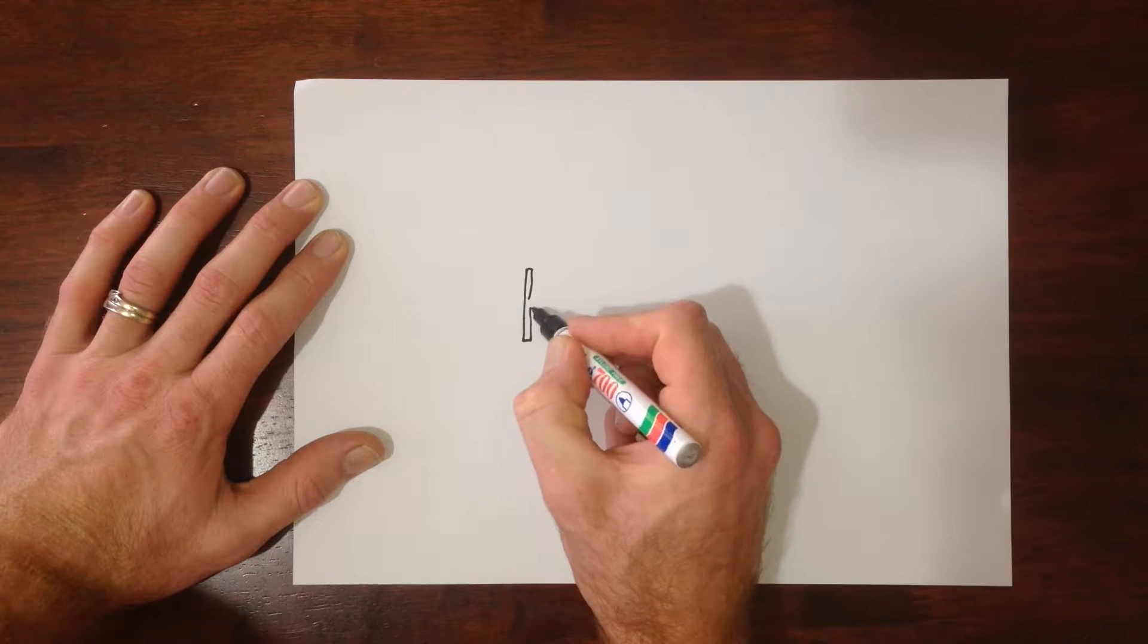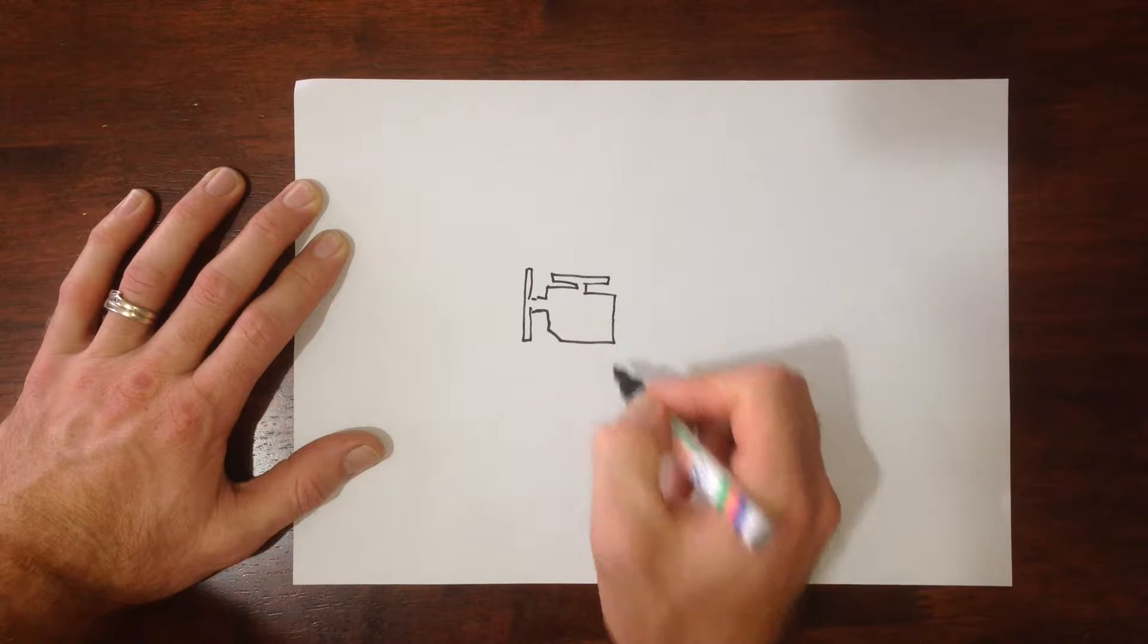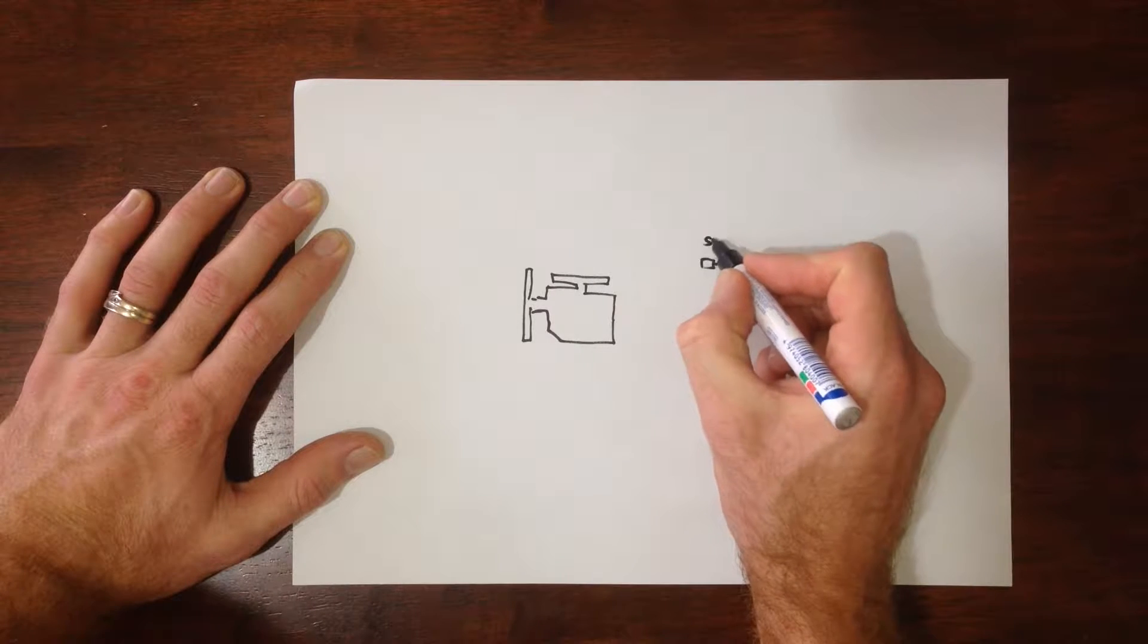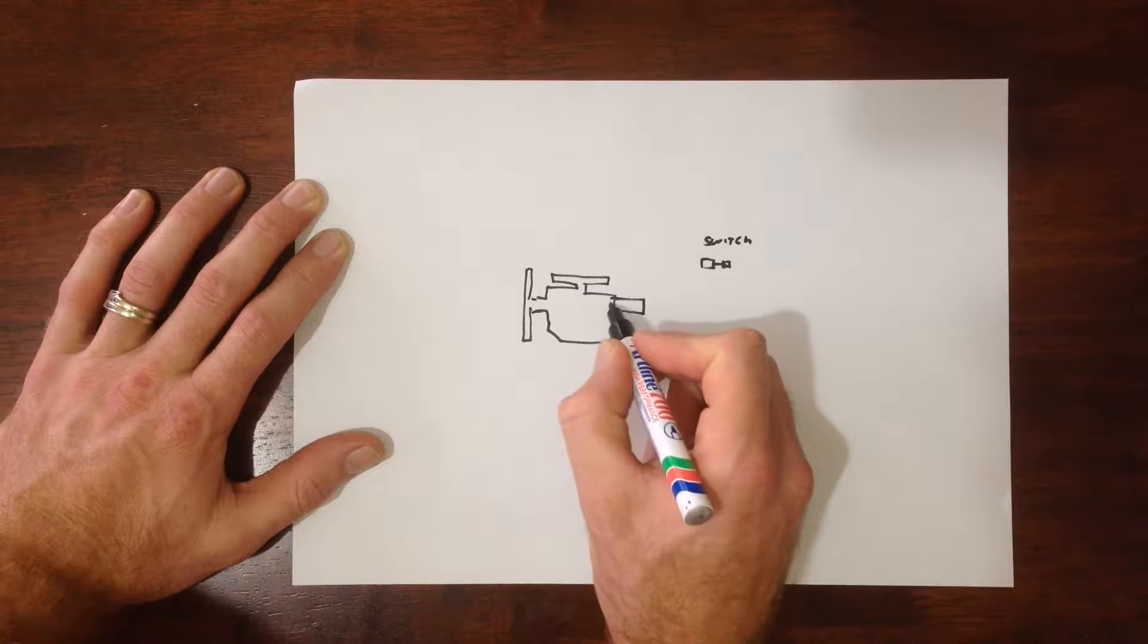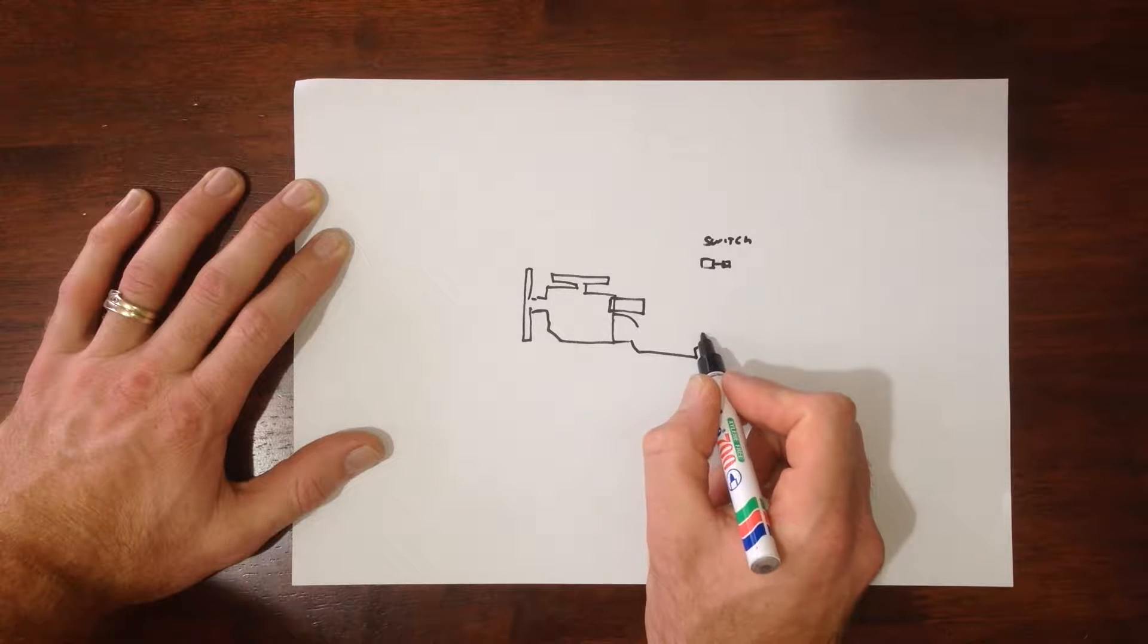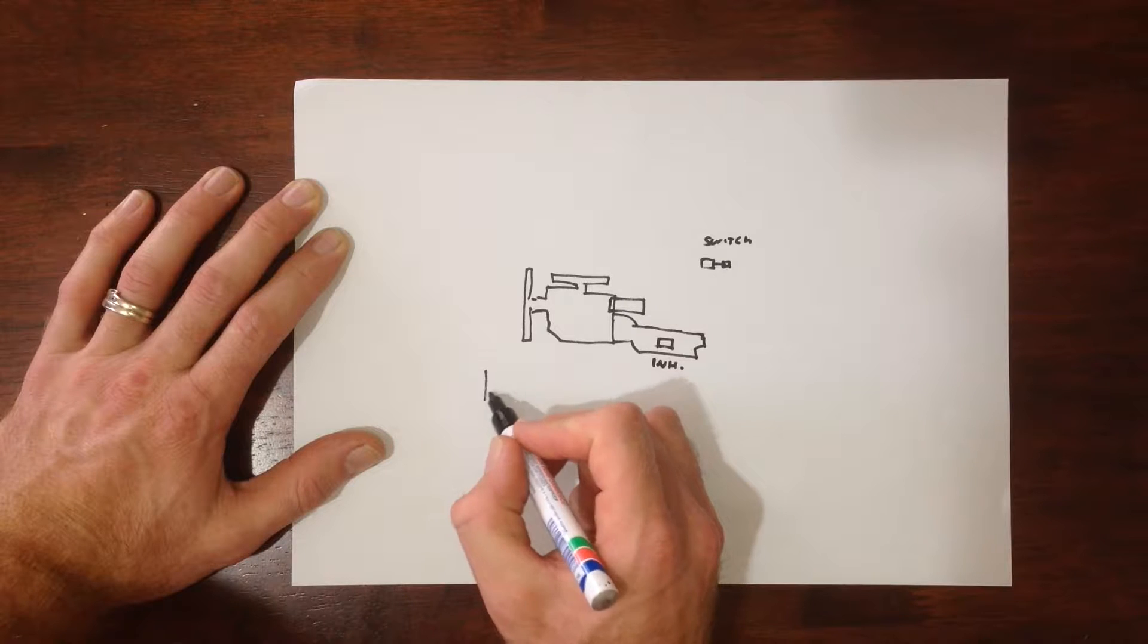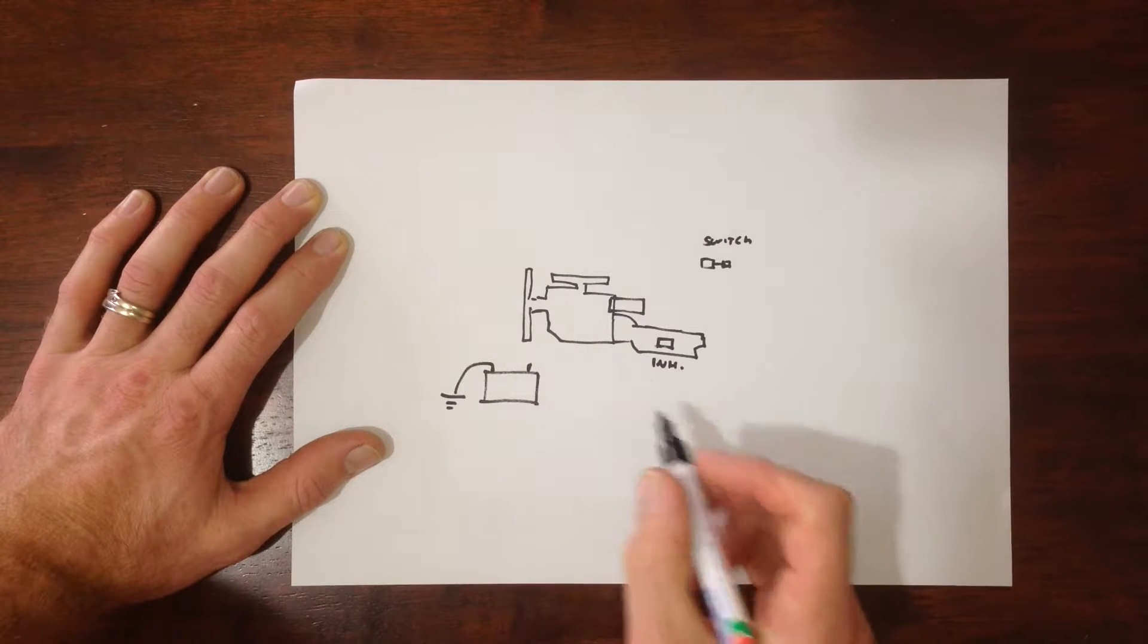Alright, so here's a very basic but indicative layout of a traditional starter system. Okay, so we have our engine. There we go. And we have inside the car our ignition switch with our key. And we have our starter motor. Okay, and also on the transmission, we have our inhibitor switch. And then we have our battery.